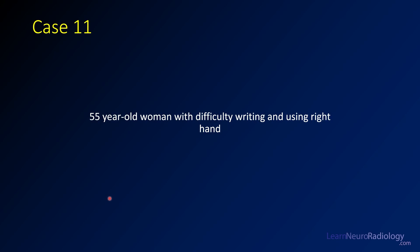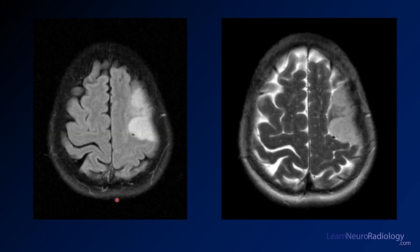Welcome to Learn Neuroradiology, and welcome to case 11 of this brain tumor ABR board review. Case number 11 is a 55-year-old woman who is having difficulty writing and using the right hand. Here on an MRI we have FLAIR and T2 axial images through the brain near the vertex. Take a look at that abnormality and figure out where you think it might be arising from.